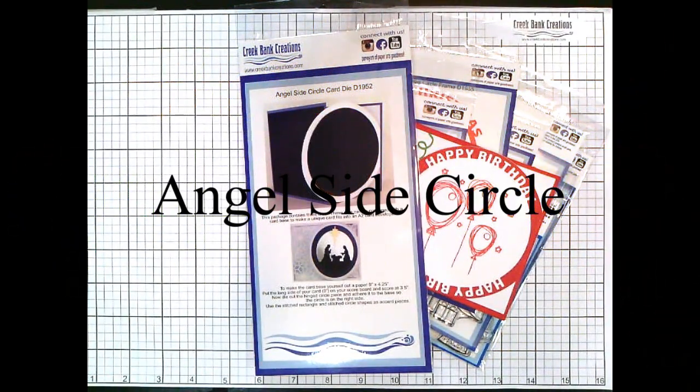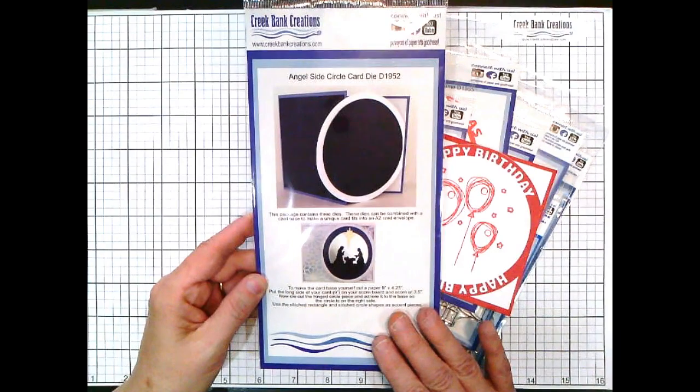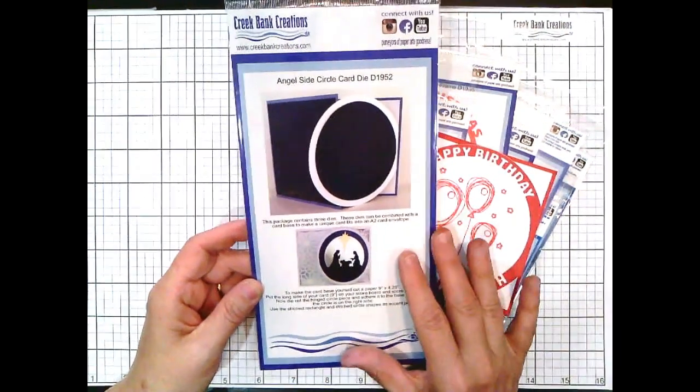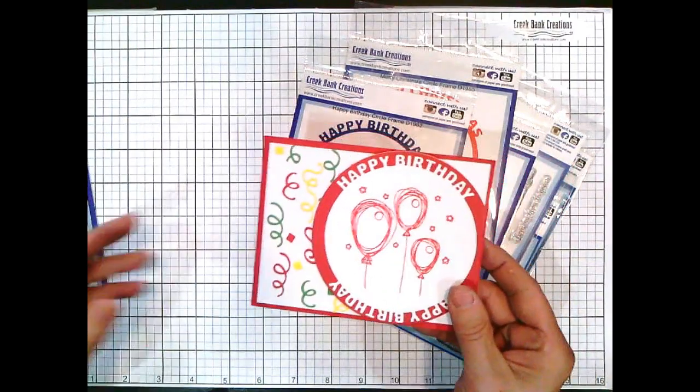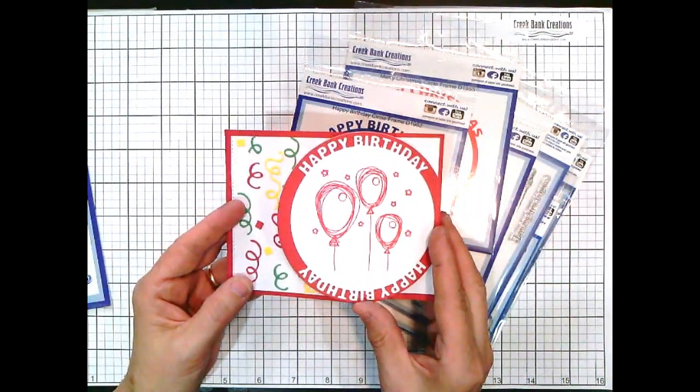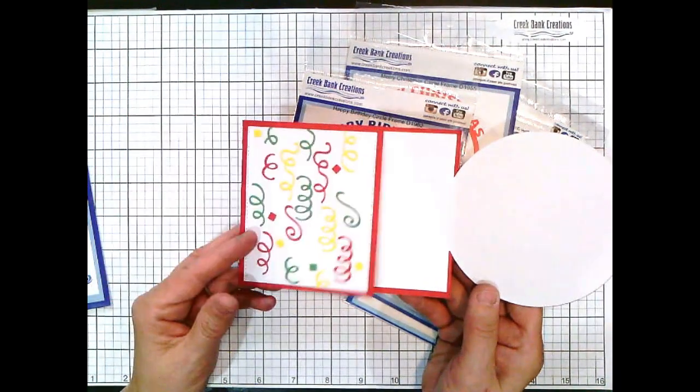Hey crafters, it's Julie Creek from Creek Bank Creations. I'm here to share with you today the angel side circle card. This is a base shape card that I designed. It fits in an A2 envelope, has a unique feature, and has this circle that tabs open where you can put your greeting inside.